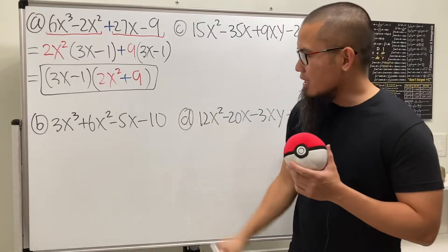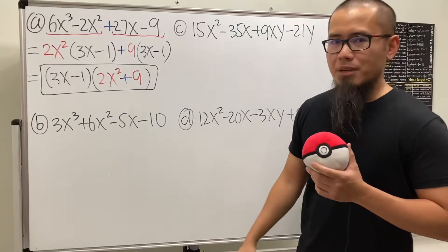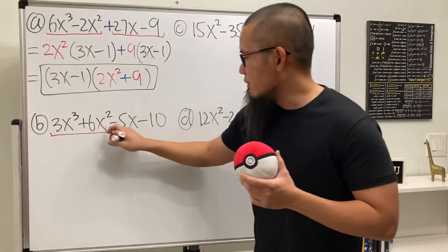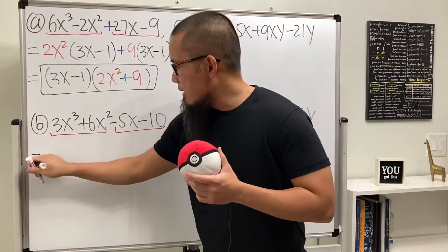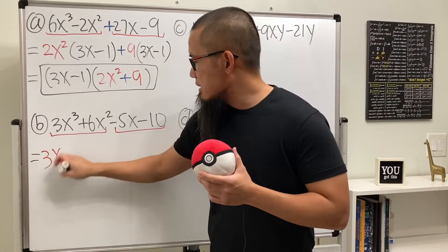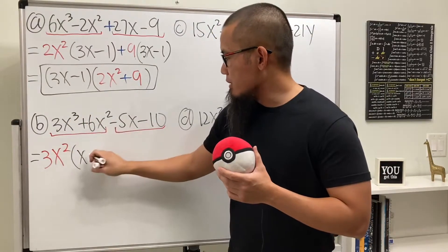That's it. Now, for the second one, again, cannot factor out any common number, so let's go ahead and just look at the first two terms. Last two terms, this and that, well, we can factor out 3x to the second power. And here we see x and then plus 2.